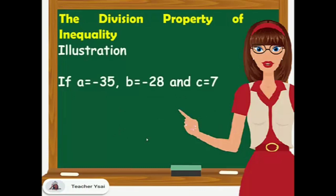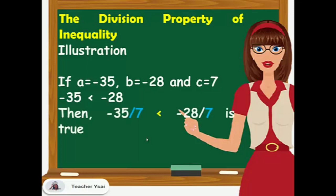Another example: if A equals negative 35, B equals negative 28, and C equals 7, negative 35 is lesser than negative 28. If we divide 7 from both sides of the inequality, we have negative 35 divided by 7 is still lesser than negative 28 divided by 7. Since negative 35 divided by 7 is negative 5 and negative 28 divided by 7 is negative 4, and negative 5 is lesser than negative 4. The inequality relation does not change.